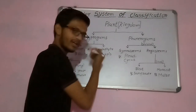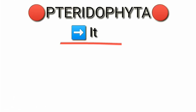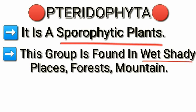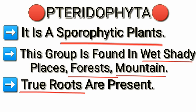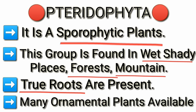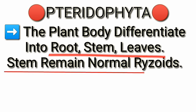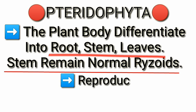Next is Pteridophyta. These are sporophytic plants. These group plants are available in shaded areas, forests, and mountains. True roots are present. Many ornamental plants belong to this group. The plant body is differentiated into three parts: root, stem, and leaves. The stem remains underground as rhizomes.